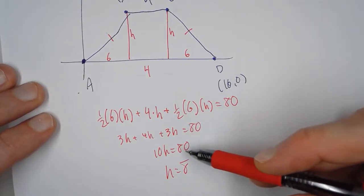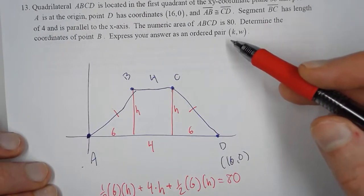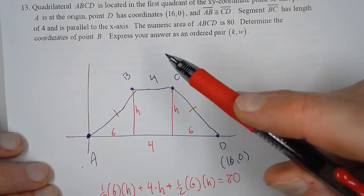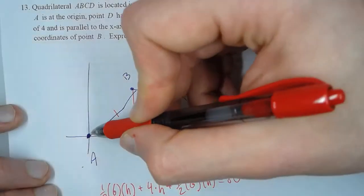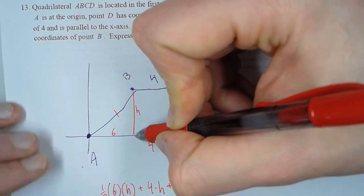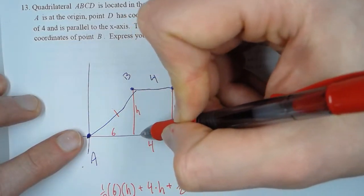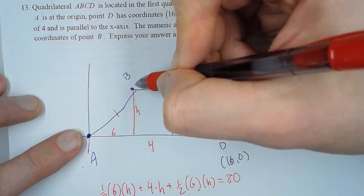So now we have everything we need to answer the question, what is the ordered pair (K, W)? That is the coordinates of B. Well, A is at the origin, and we go over 6 units, because we already figured that out, and then we have to go up 8 units.